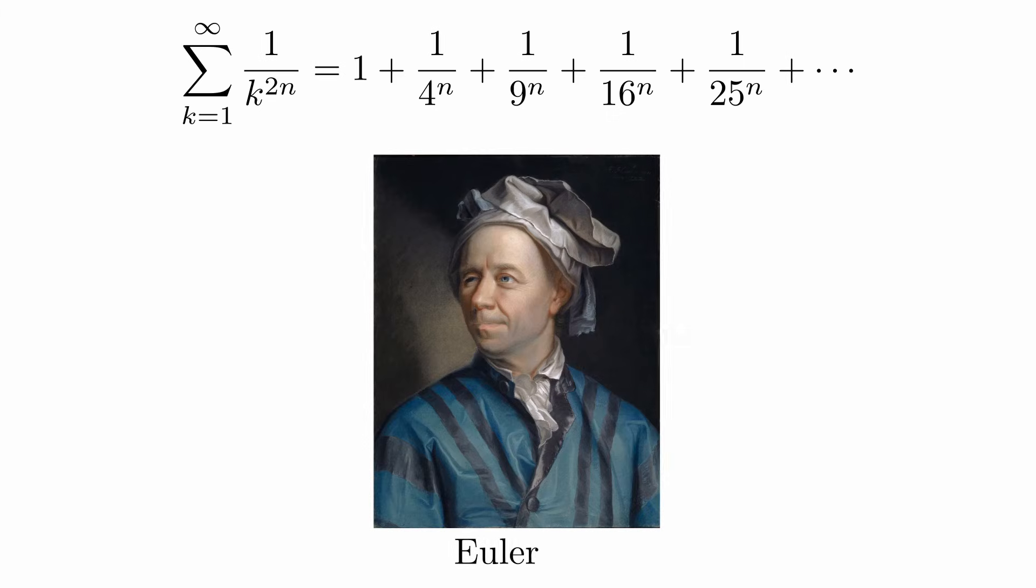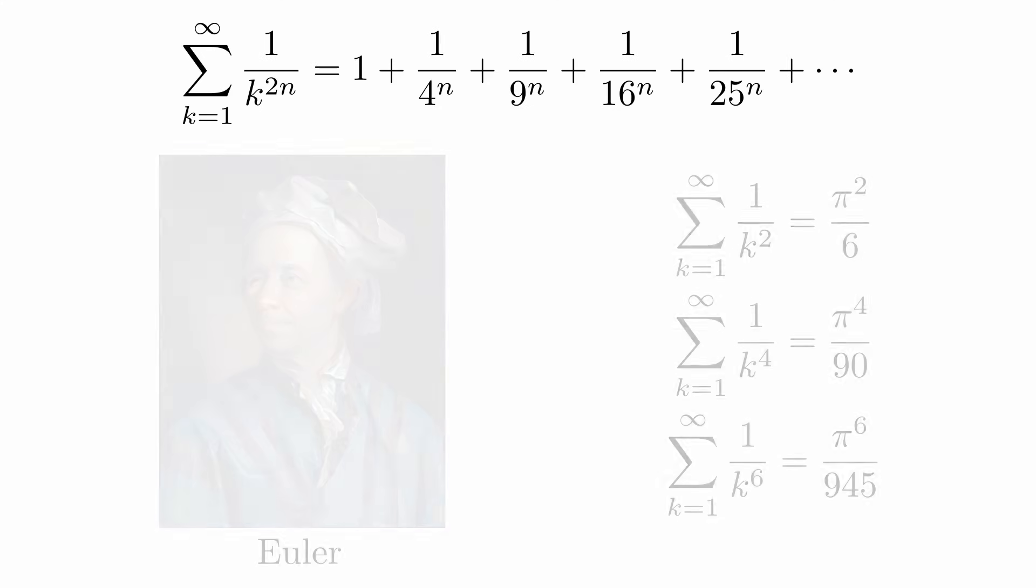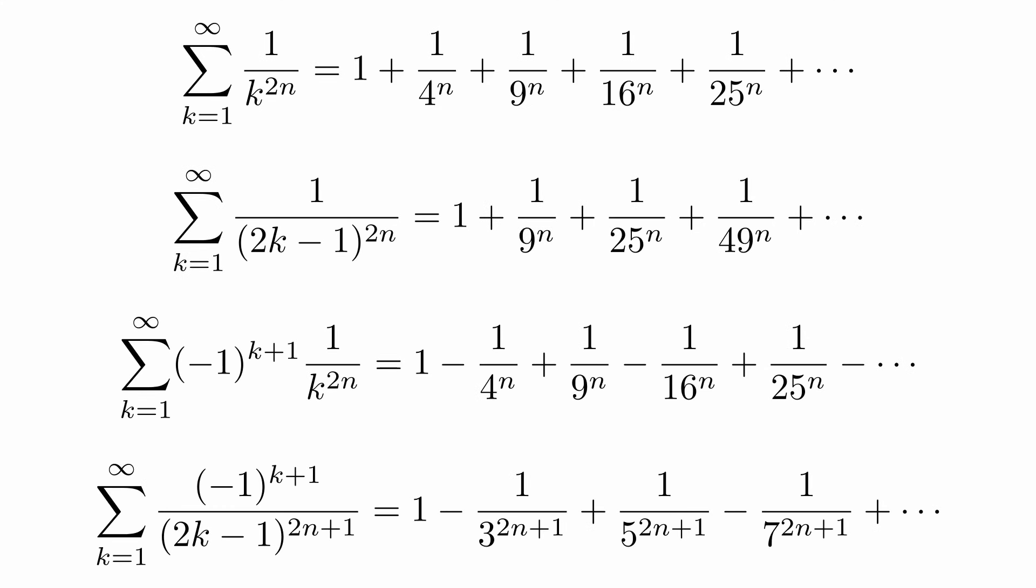For example, when you sum over 1 over k squared, you get pi squared divided by 6. When you sum terms to the fourth power, you get some multiple of the fourth power of pi. We will also be able to evaluate some similar infinite sums using similar methods.